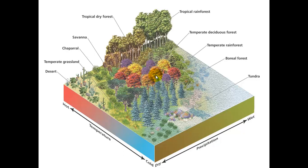In the temperate deciduous forest we have trees that lose their leaves in the wintertime when it's cold, and we have a fair amount of biodiversity. Here where we live in Santa Barbara we have chaparral — it's mostly hot but we do have a mix because we can get into some colder areas and also some precipitation like we have during the rain season.